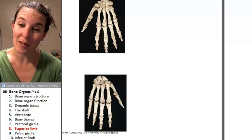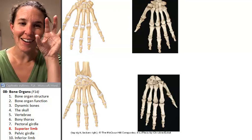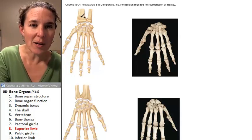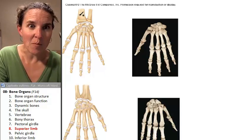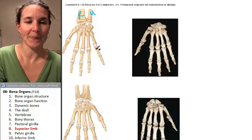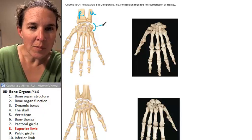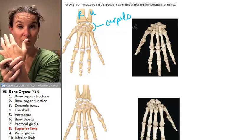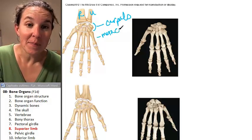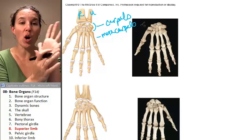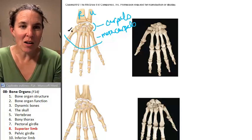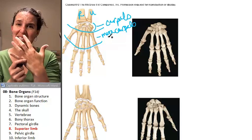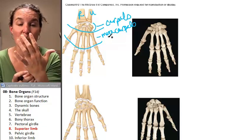Let's look at the rest of our upper limb. This is the radius on the thumb side, and this is the ulna on the pinky side. All those blobs are called carpals — the carpals are basically your wrist bones. Then we have metacarpals, which are your palm bones. They look like really long fingers, which is why skeletons look like they have really long fingers.